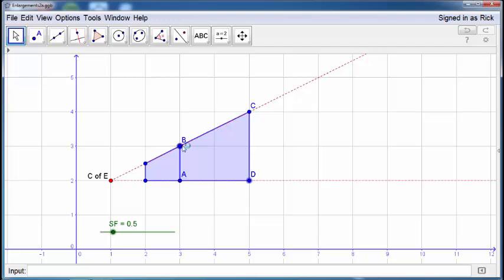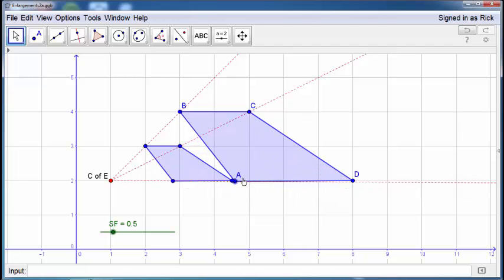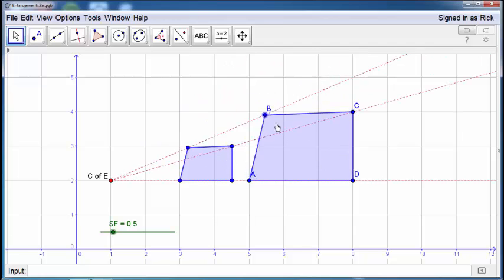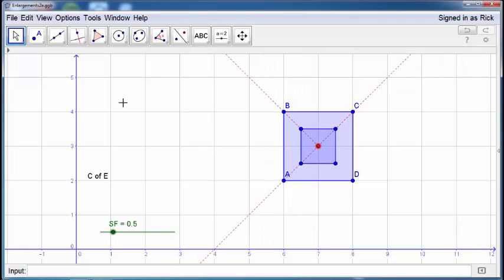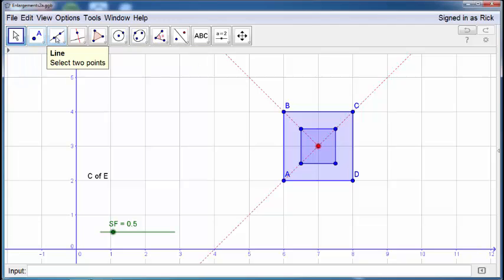What I thought I'll do is just change my original object. We're going to have a bit of fun here. We have a larger original object, so I'm going to put my center of enlargement in the middle of my object. I'm going to make a square there.